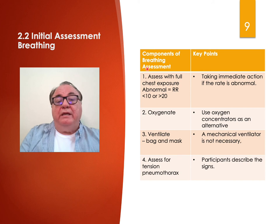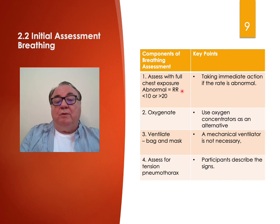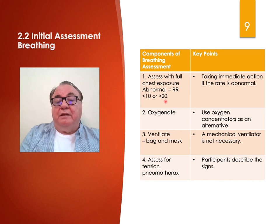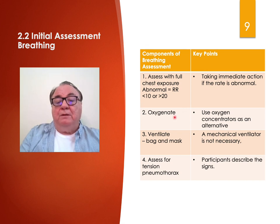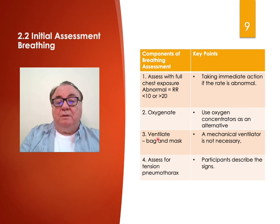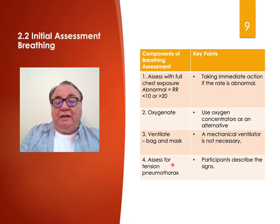Intimately associated with airway is breathing. You must assess the full chest — expose it. Look at the respiratory rate: if it's less than 10 or greater than 29, it's abnormal. Take immediate action if the rate is abnormal. Always oxygenate the trauma patient. Use oxygen concentrators as an alternative to bottled or wall oxygen. Ventilate with a bag and mask — a mechanical ventilator is not necessary. Assess for tension pneumothorax: is there shifting of the trachea or distended neck veins?